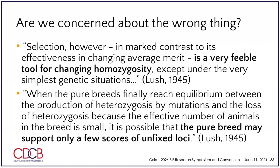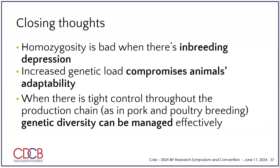That sounds nice — until you stop and think: does the ideal Angus animal today look the same as the ideal Angus animal in 1980? I can tell you the ideal Holstein cow in 1916 was not the ideal Holstein cow in 1970, and it's not the ideal Holstein cow today. Part of the problem is: if we lock in all the best loci in one animal, what happens when we want to change direction? We're out of luck because we got rid of all the variation.